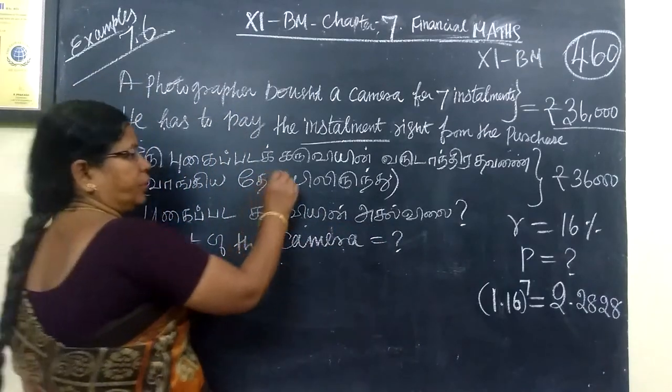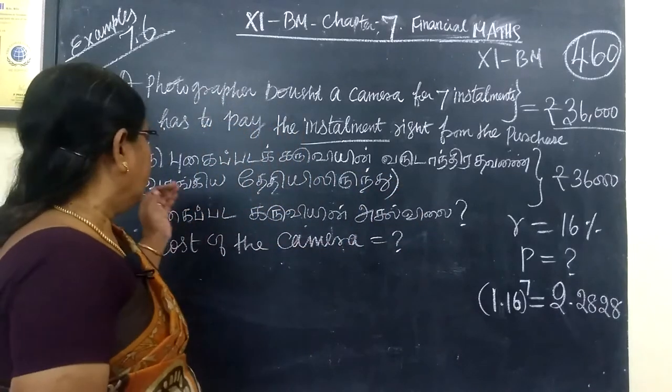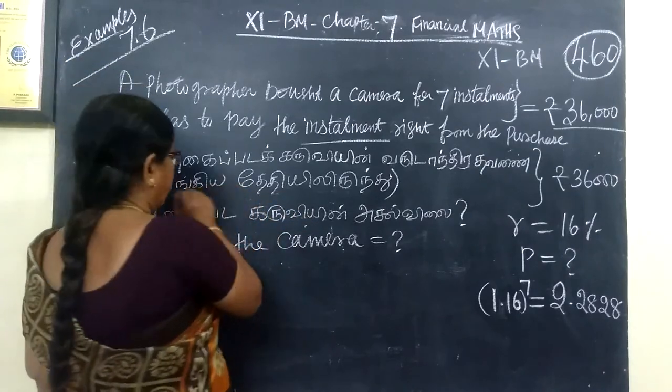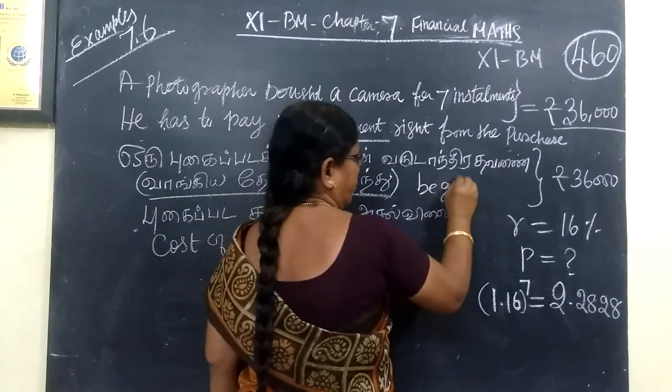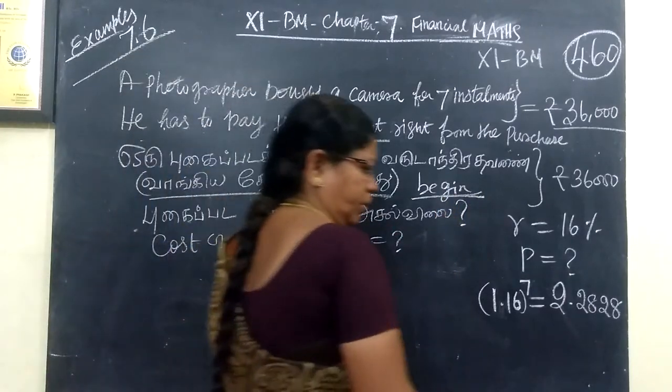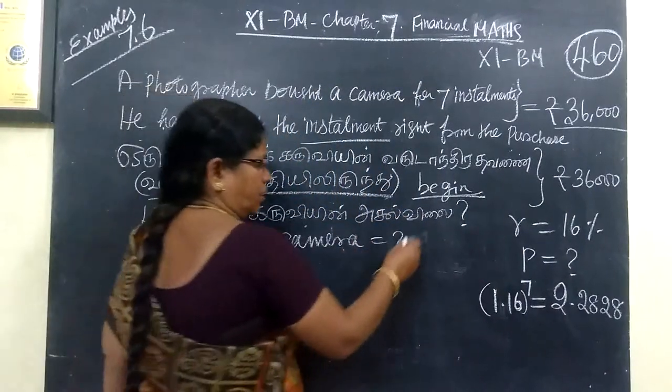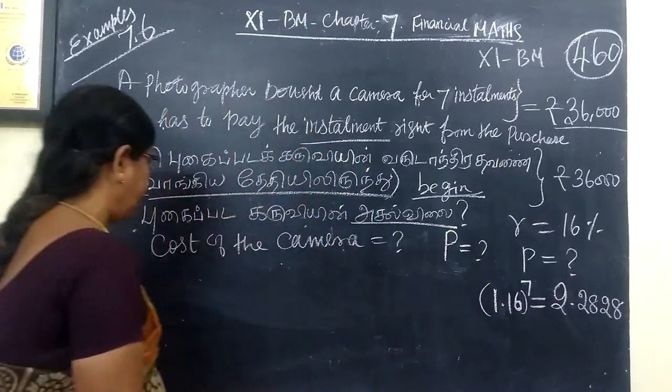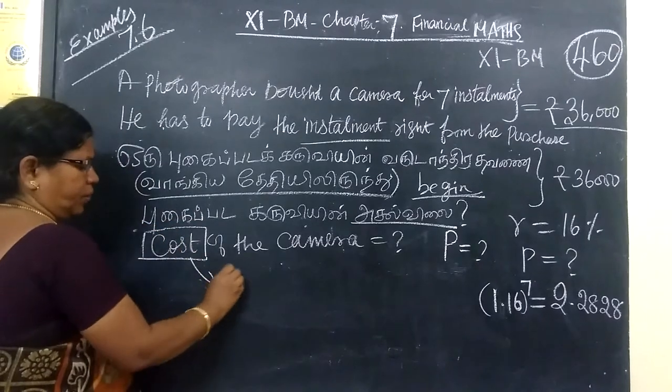The first installment is at the beginning. If we see the next person, what is that? P. That means we are finding the cost of the camera. Cost means we are finding P.